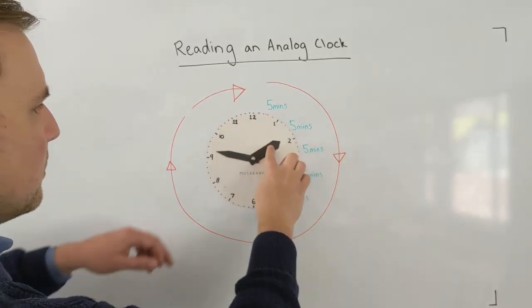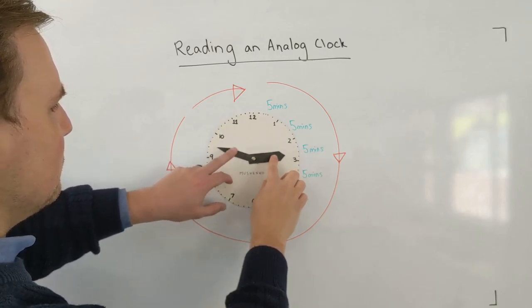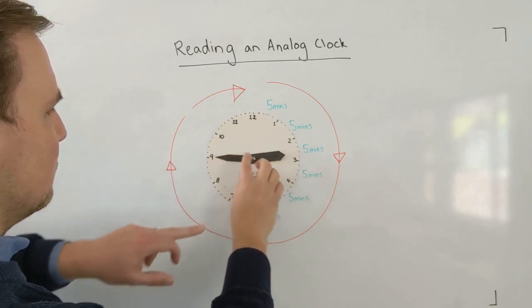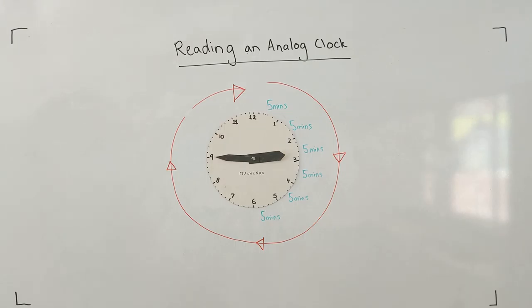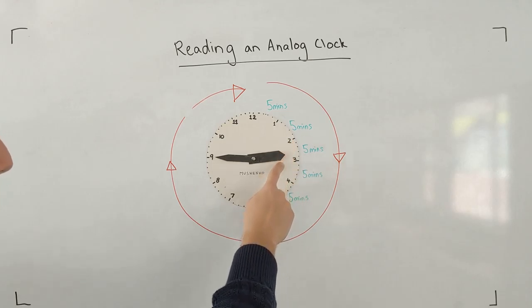Let's try another example. Okay, so in this example, we start with the hour hand as always. It's past the 2. It's getting closer to the 3. It's not quite there yet though.